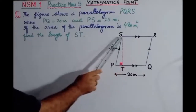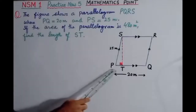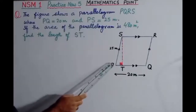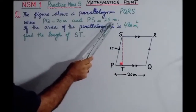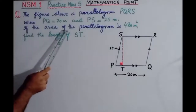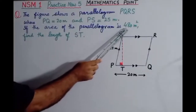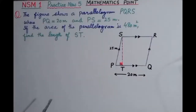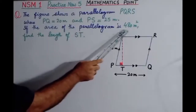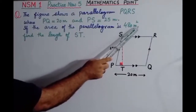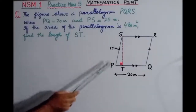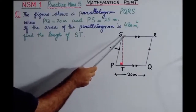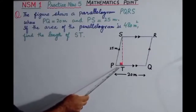This is parallelogram PQRS, where the length of PQ is equal to 20 meters and PS is equal to 25 meters. The area of the parallelogram is 480 meter square. We have to find out the length of ST.